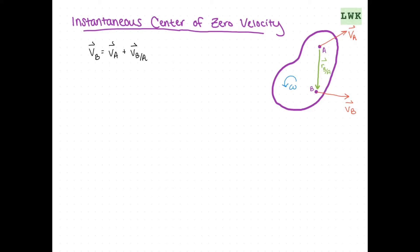We can also say that the velocity of B equals the velocity of A plus omega cross R of B relative to A. So if we choose a point A such that the velocity of A equals zero, or any point we choose equals zero, then we can say VB equals omega cross R of B relative to A.